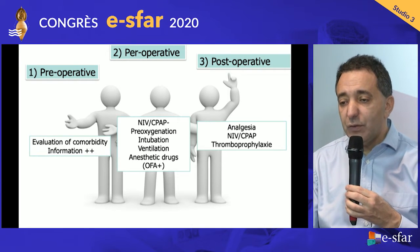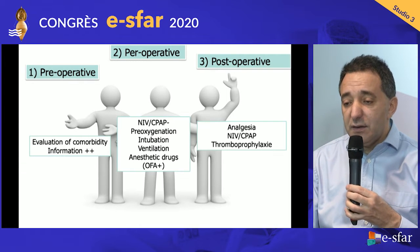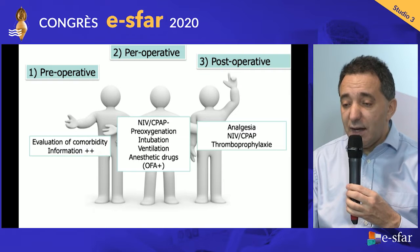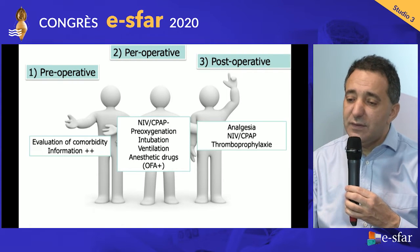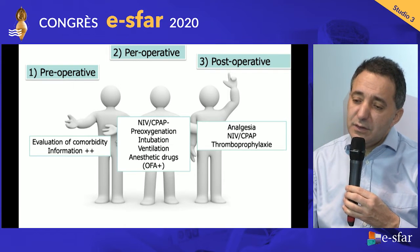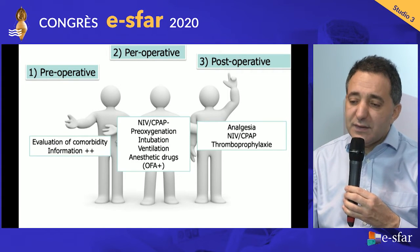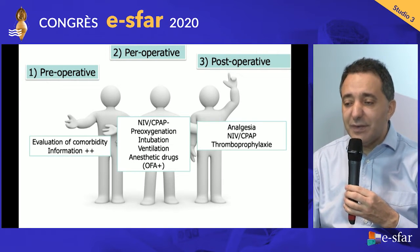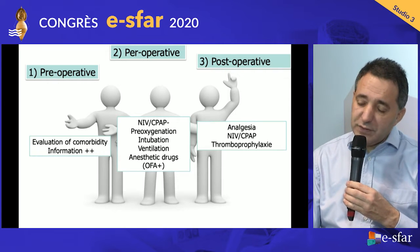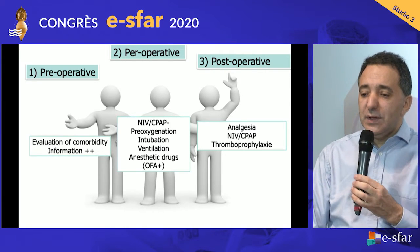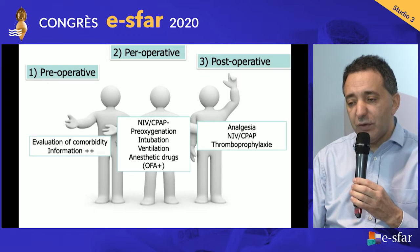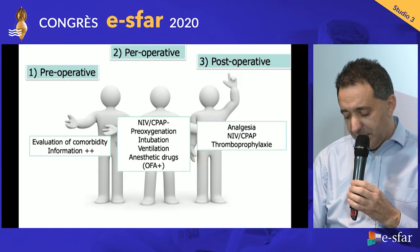The second part is the perioperative phase, which I will focus on, starting with pre-oxygenation, then optimal ventilation, and hemodynamic management. We now have new data about anesthetic drugs, and Jérôme will present recent data about OFA — opioid-free analgesia. Last, postoperative management uses good ventilatory support after surgery to compensate for diaphragm dysfunction, respiratory modifications, and optimal thromboprophylaxis.